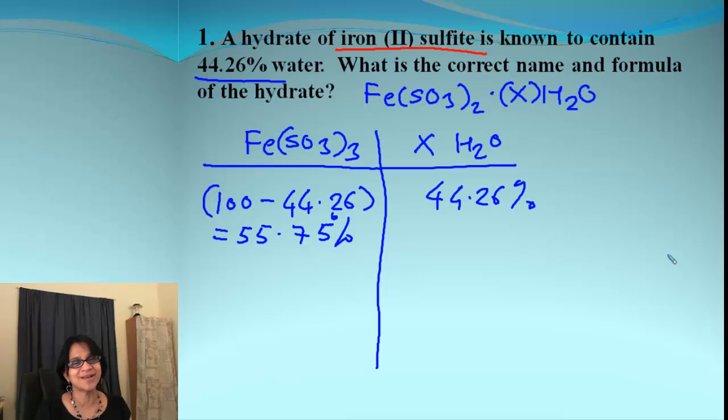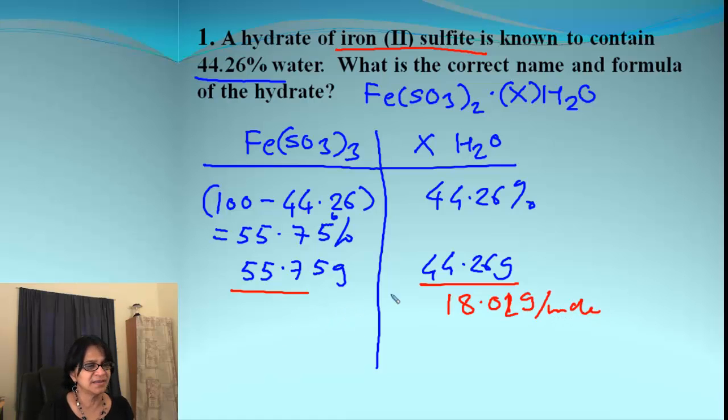We're going to go back to our empirical formula. So it's percent to the mass. It is same if we consider the mass is out of 100 grams. We got from percent to the mass. And then mass to the moles. When we do mass to the mole, we are dividing by the molar mass. Molar mass for water is 18.02 grams per mole. And then for iron sulfite, it is 135.91 grams per mole.